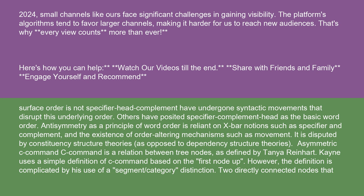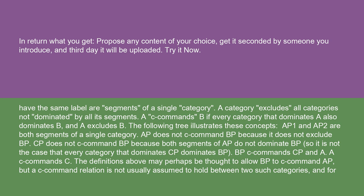Asymmetric C-command: C-command is a relation between tree nodes, as defined by Tanya Reinhardt. Kayne uses a simple definition of C-command based on the first node up. However, the definition is complicated by his use of a segment/category distinction. Two directly connected nodes that have the same label are segments of a single category. A category excludes all categories not dominated by all its segments. A C-commands B if every category that dominates A also dominates B, and A excludes B.